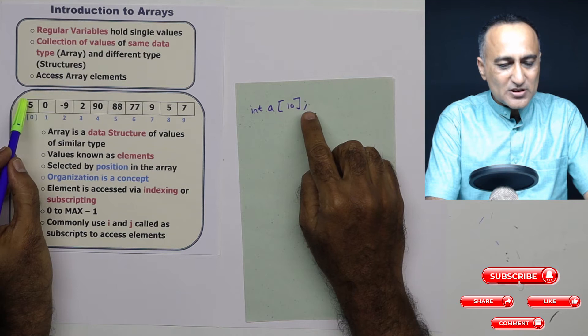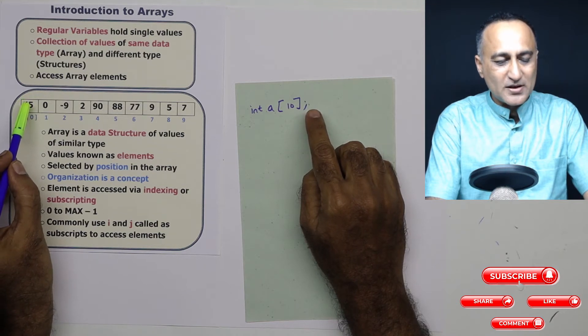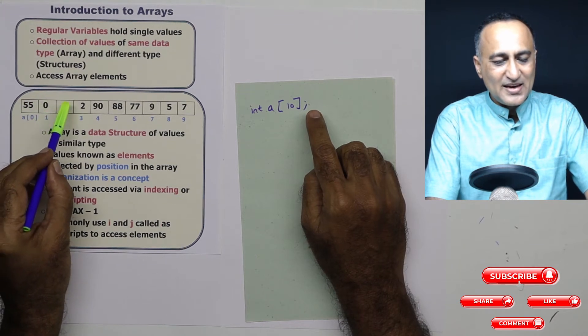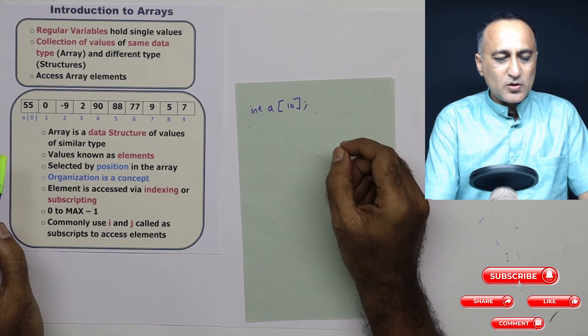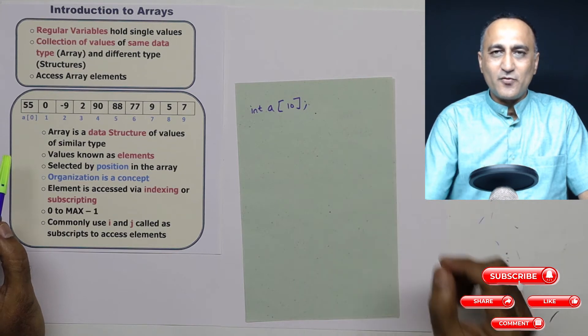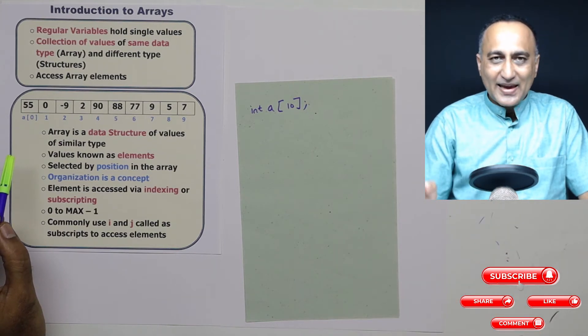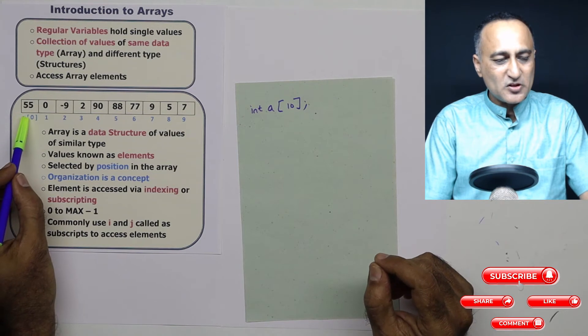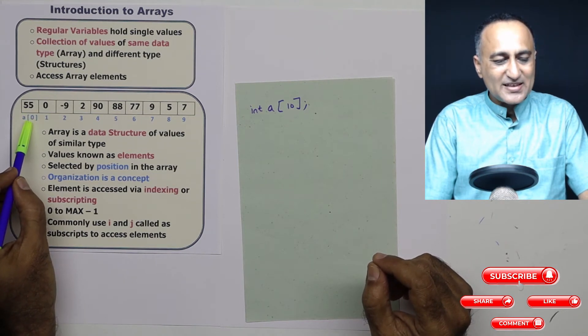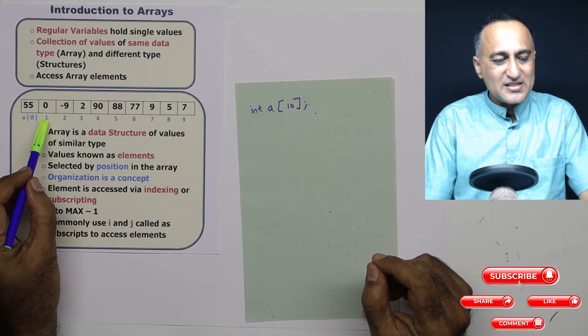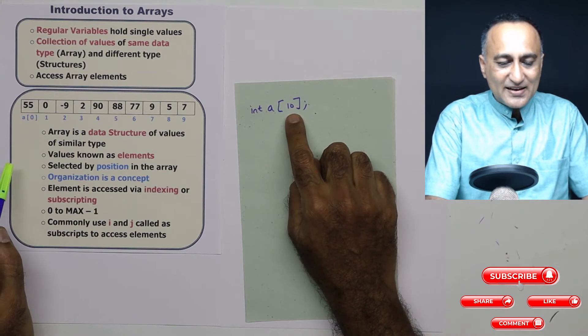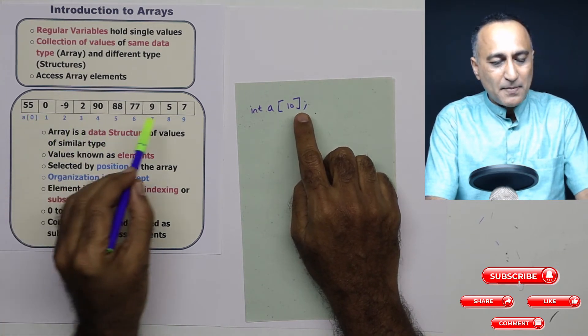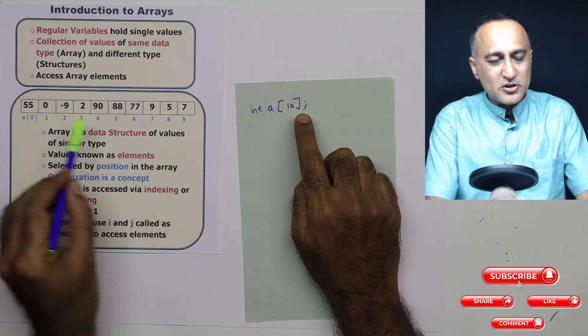Let us say this is the 10 blocks of memory location given to hold these 10 numbers. Let us say in each of those 10 locations different values are stored. For example, in the first location 55, second 0, third minus 9 and in the last location 7. A few things you need to understand. Normally in real life we start counting from 1. But in arrays we start counting from 0. So 55 is considered to exist at the 0th location. 0 is considered to exist at the first location.